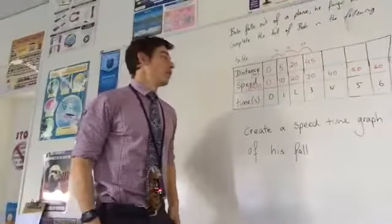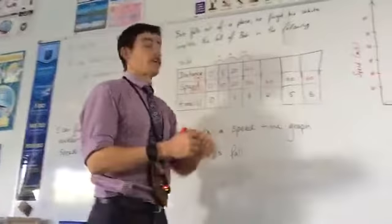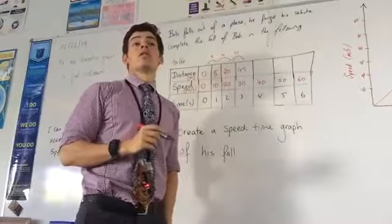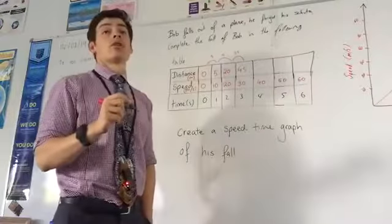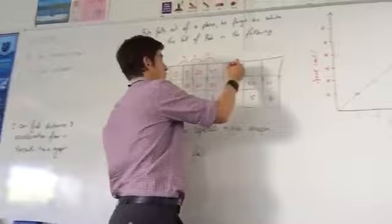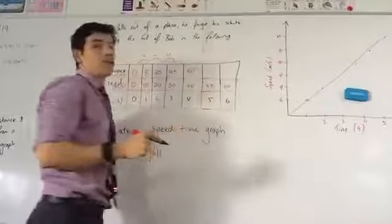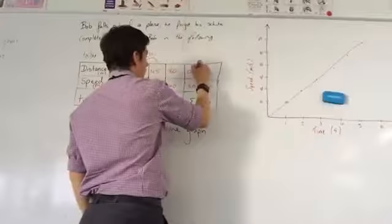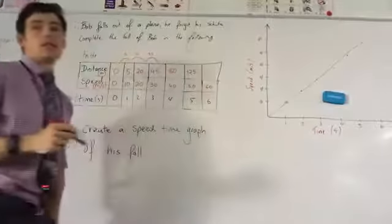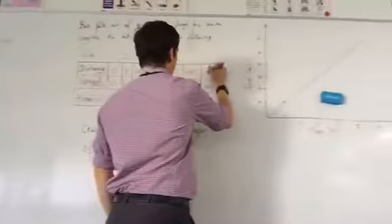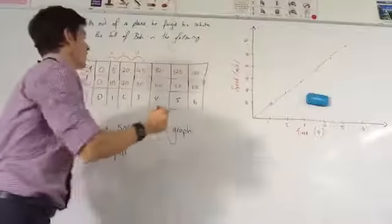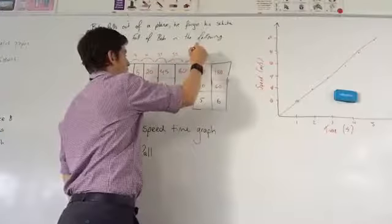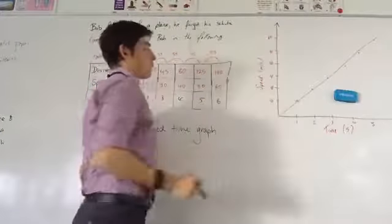So what have we got for our speed in the fourth second? Sorry, displacement at the end of the fourth second. Michael, yep. 80. Good man, correct. In the fifth second, what do we think? 125. And finally, in the sixth second? 180. Very good. Well done. And we've got 35, 45, 55. Happy with that?